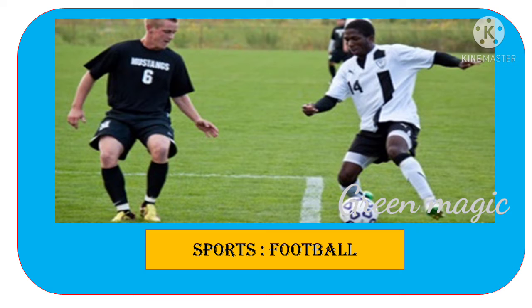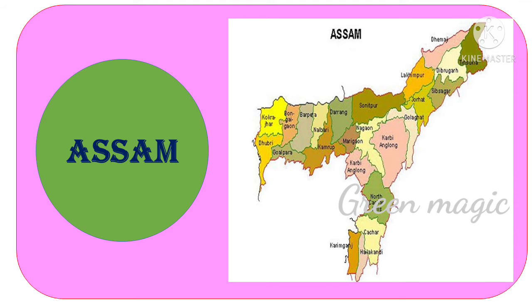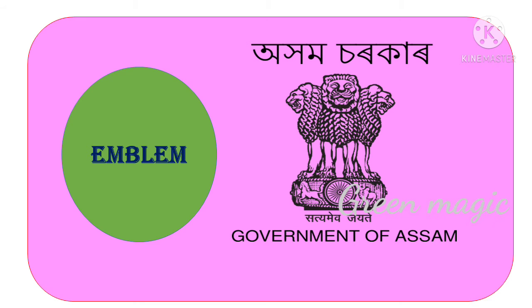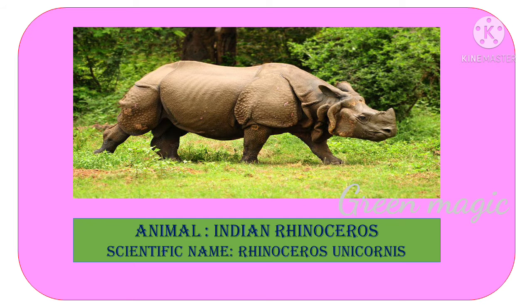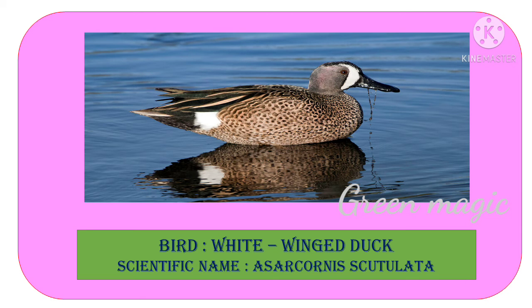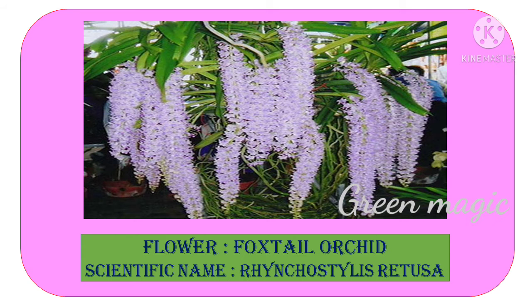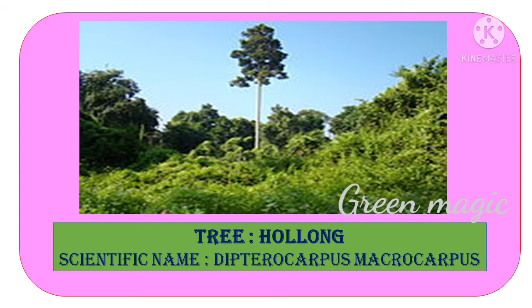Our third state is Assam. This is the map of Assam. This is the emblem of Assam. Animal: Indian Rhinoceros. Bird: White-winged Duck. Flower: Foxtail Orchid. Tree: Ho-Long.